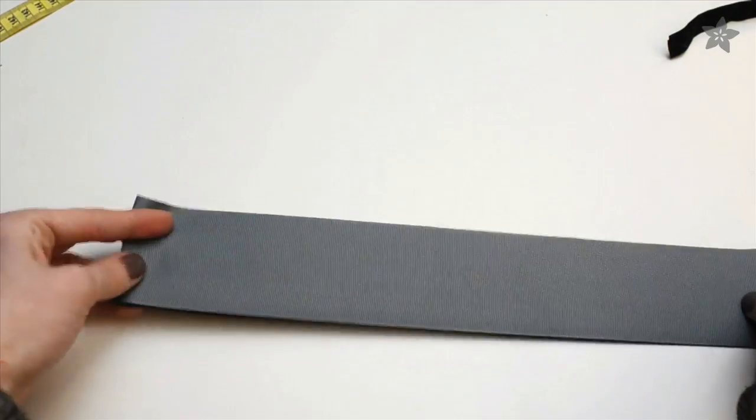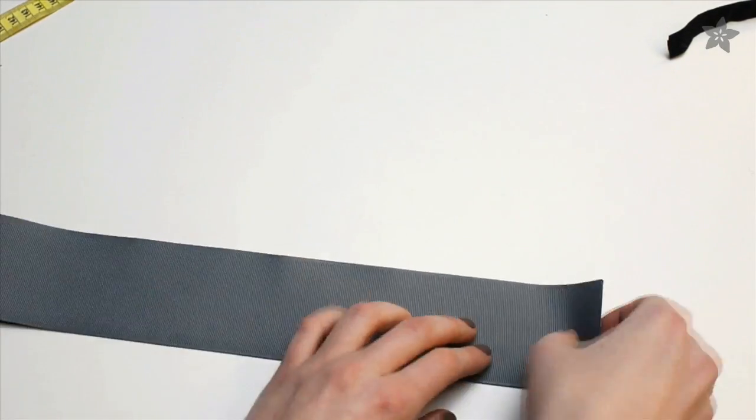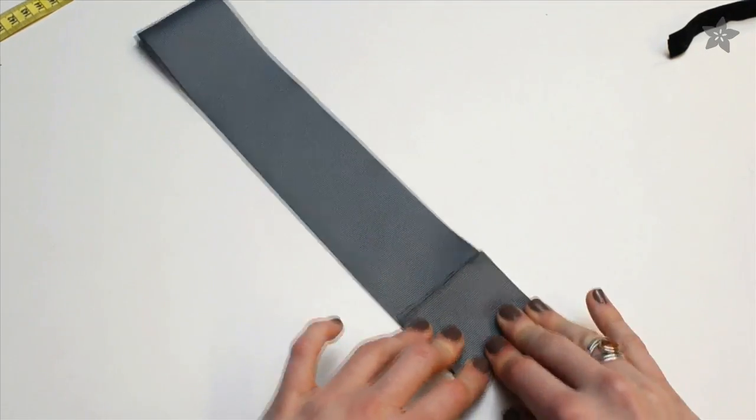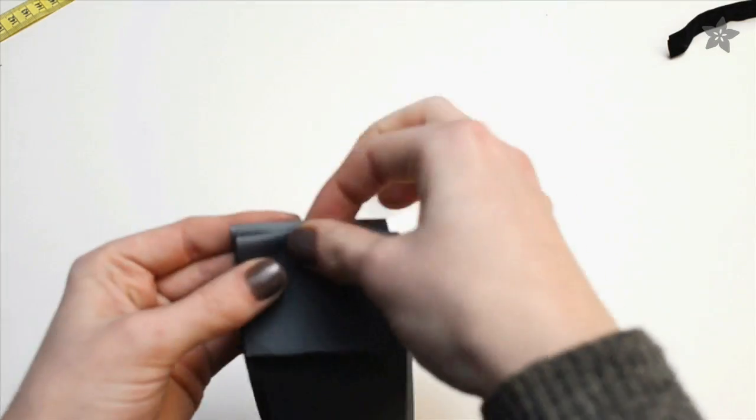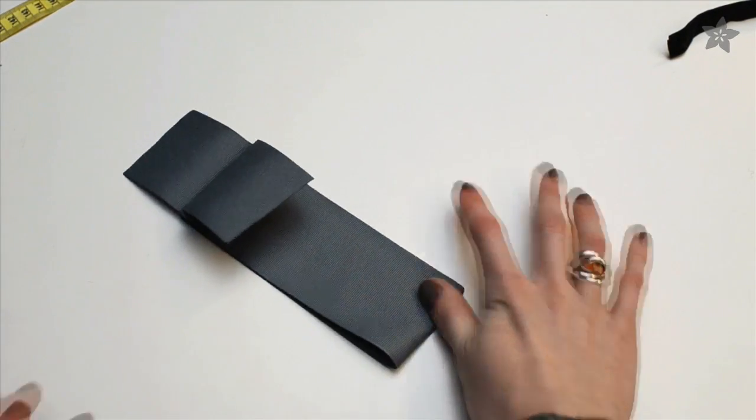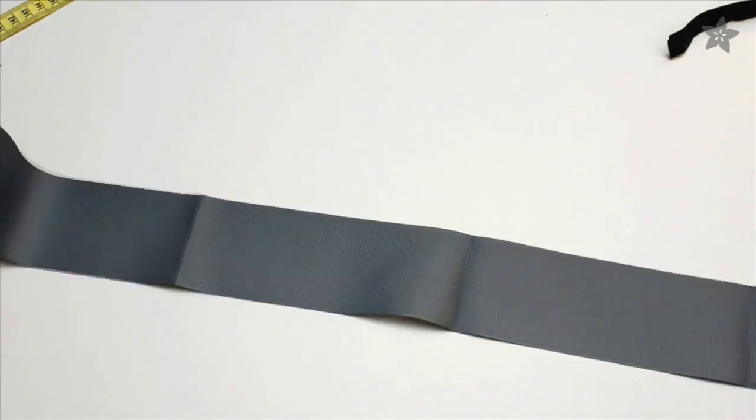Fold the ribbon in half and make a crease. Then take the cut ends and fold them up together two inches from the end of the ribbon. Fold the ribbon in half once more, this time matching up that fold you just made with the center fold and crease your ribbon again. Then you can unfold your ribbon.